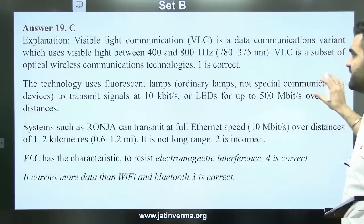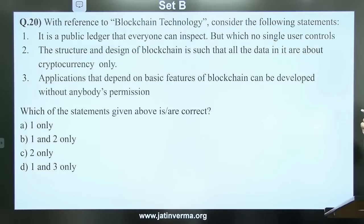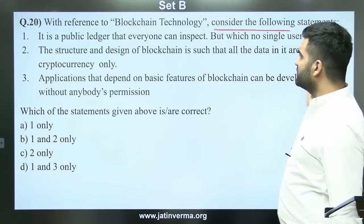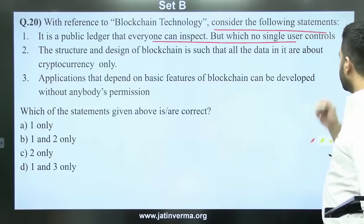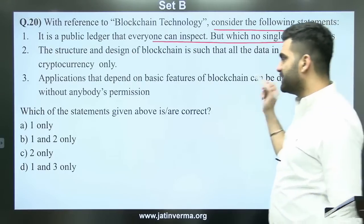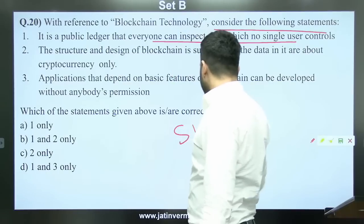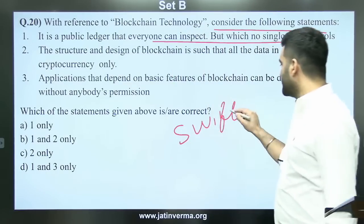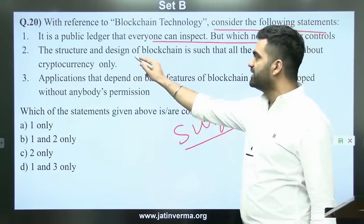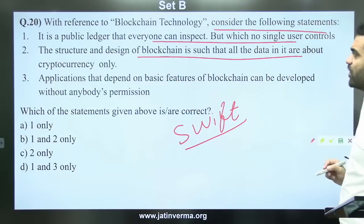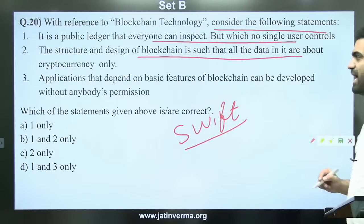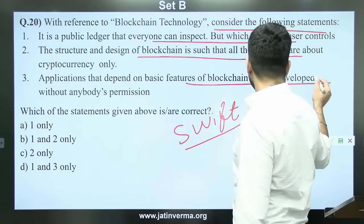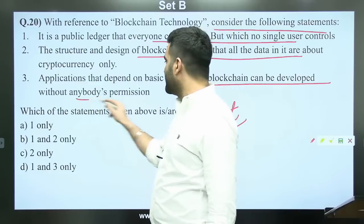Question 20: With reference to blockchain technology — it was heavily in current affairs due to Bitcoin and the PNB-SWIFT scam. Consider: it is a public ledger that everyone can inspect which no single user controls; the structure and design of blockchain is such that all data in it are about cryptocurrency only; applications that depend on basic features of blockchain can be developed without anybody's permission.